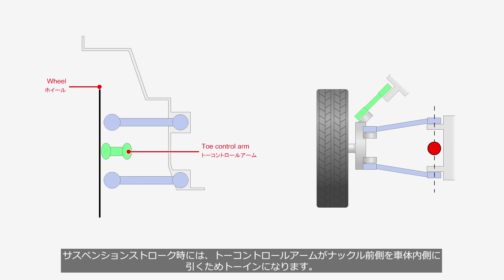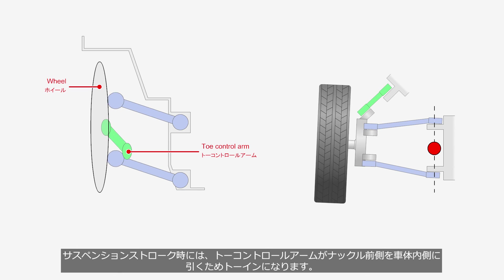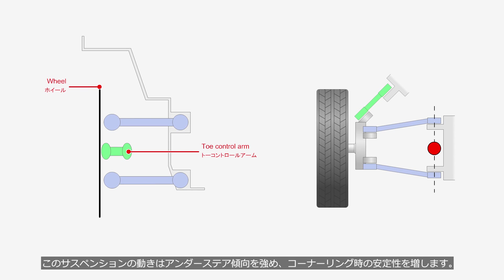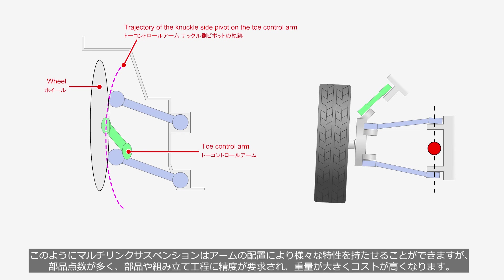During suspension stroke, the toe control arm pulls the front side of the knuckle toward the inside of the vehicle body, causing toe-in. This suspension movement enhances understeer tendency, increasing stability during cornering. In this way, multi-link suspension can exhibit various characteristics based on the arrangement of its arms. However, it involves a higher number of components, demanding precision in both parts and assembly processes, resulting in increased weight and higher costs.